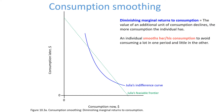We have an indifference curve which is bowed toward the origin as a result of diminishing marginal returns to consumption in the two periods. The slope of the indifference curve is the marginal rate of substitution between consumption now and consumption later.